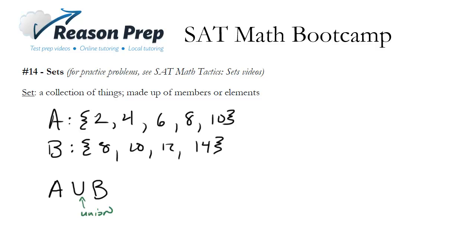And by union it means we take the elements and we just put them together. So the union of these two sets would be 2, 4, 6, 8, it appears twice but that's okay we'll just write it once, 10, 12, 14, so we just put the two sets together.